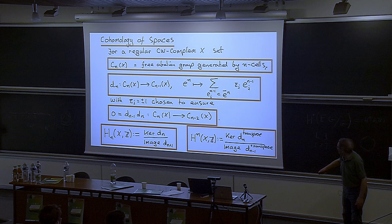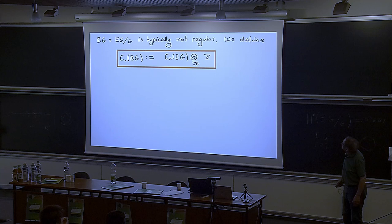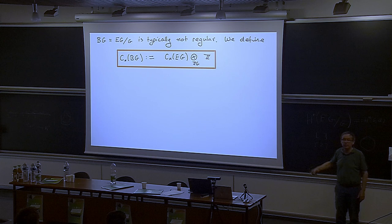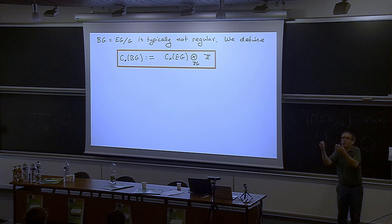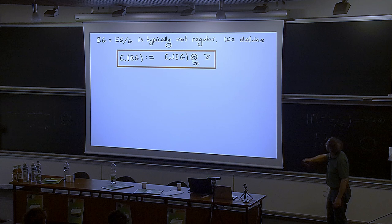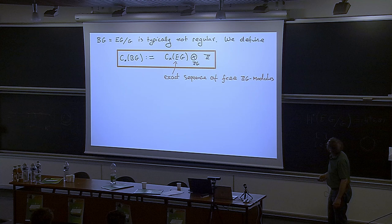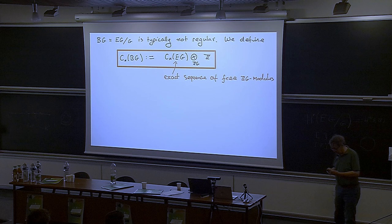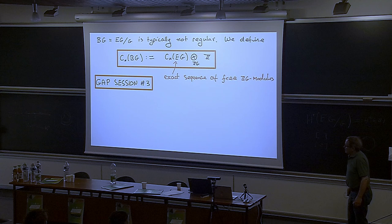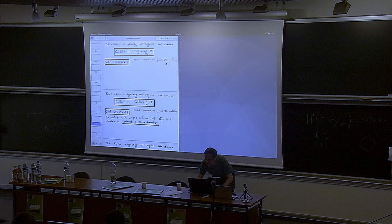So we have the cohomology of spaces and the cohomology of groups. Now if you construct a contractible space EG for your given group — I've done that with the Bieberbach group, where EG was three-dimensional Euclidean space given a CW structure — the quotient is simple: you take one generator for each orbit of cells. This gives a chain complex of free abelian groups whose homology you compute. Since EG is contractible, the chain complex C_*(EG) will actually be an exact sequence of groups.